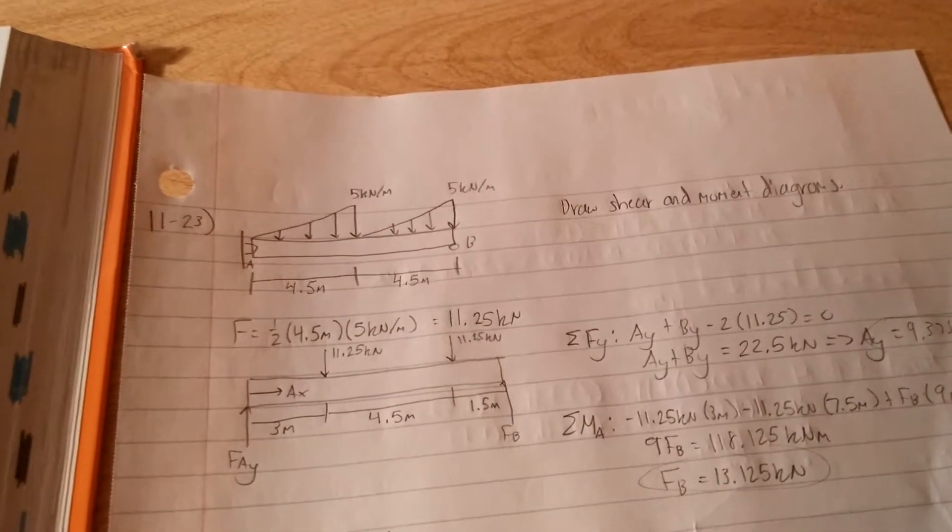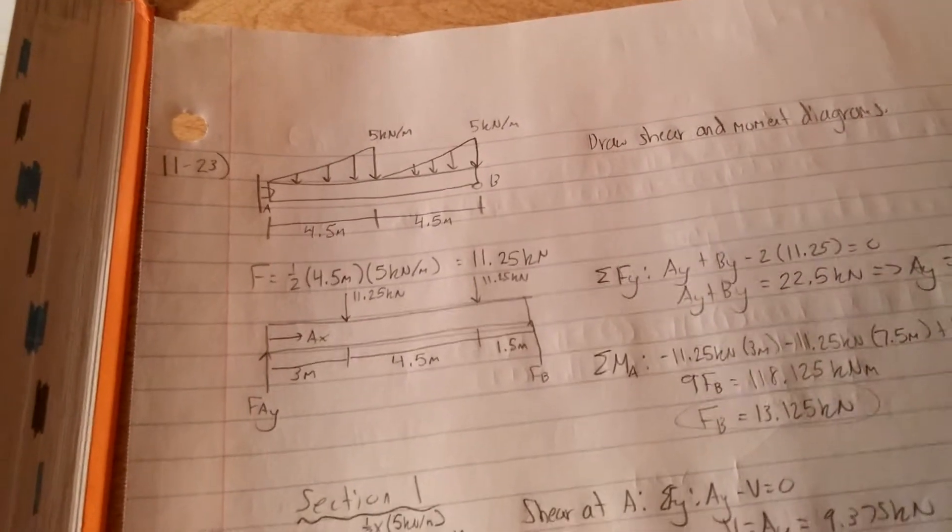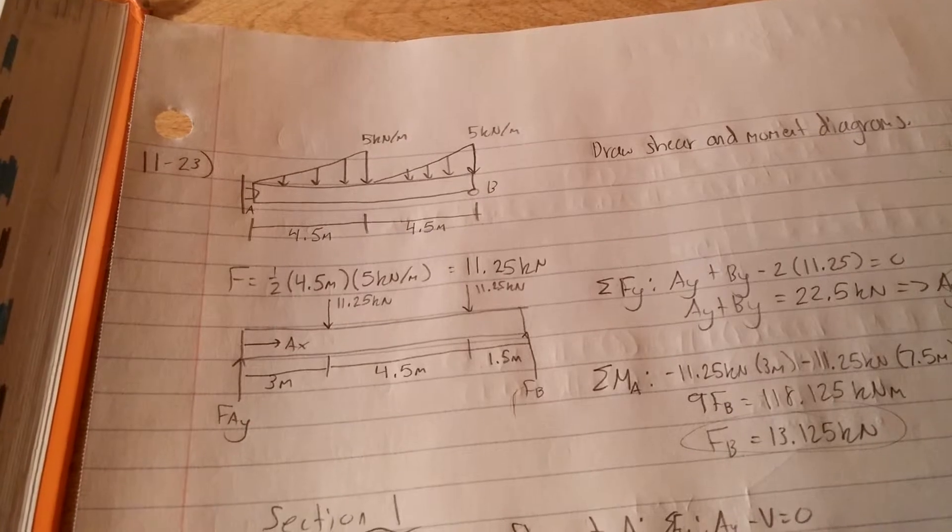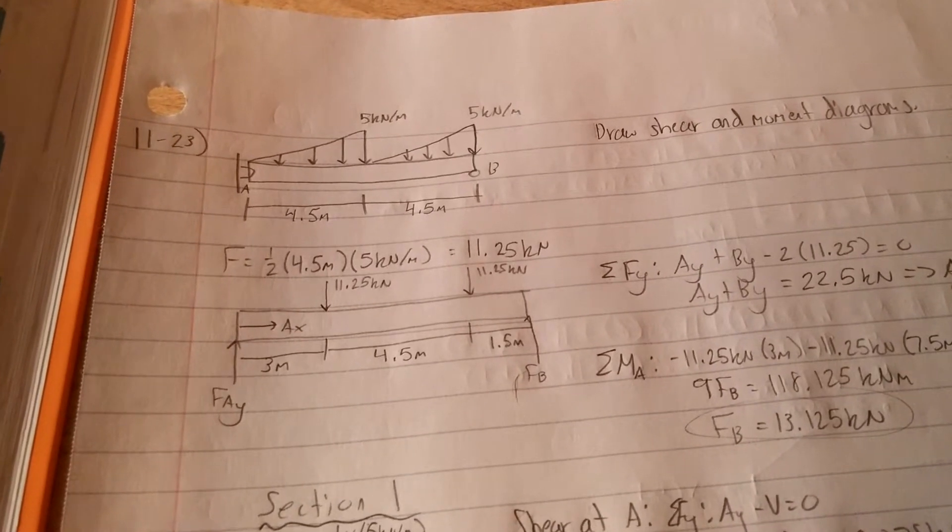You end up getting 11.25 kilonewtons. And for a triangle, the center of mass is one-third from the base.